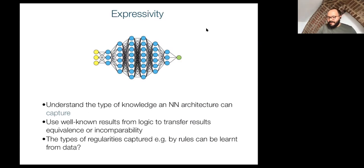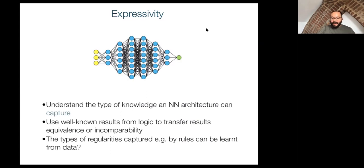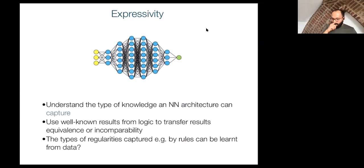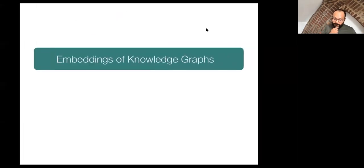The motivation for studying the relationship between neural networks and symbolic knowledge is well-motivated and there is a vast amount of directions in which you could study this. The main aim of this tutorial is not to go in depth in each direction, but to provide an overview of different things that have been done in some of these directions.